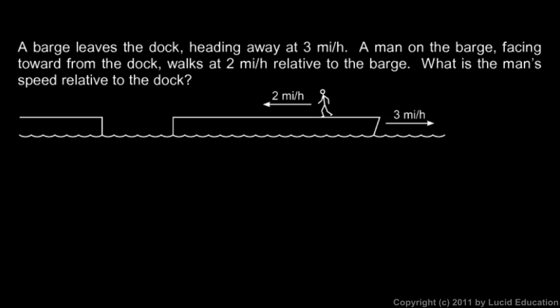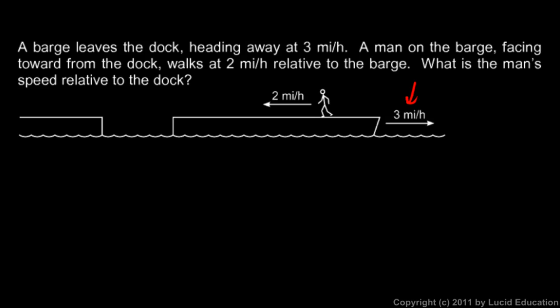This next example is similar, except the man is walking in the other direction. Again, we have the barge moving away from the dock at 3 miles per hour, and the man is walking at 2 miles per hour, but this time he's walking back toward the dock. To solve this, we need to take both of these speeds into account, but we also have to take the direction into account.